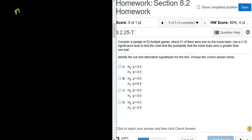So we're given n, which is the total number of observations. Looks like that's going to be 52. And then x is successes, so winning a game is success. 31 of them were won, so x is 31. The .10, that's the alpha. And we have to test the claim that the probability that the home team wins is greater than one-half.